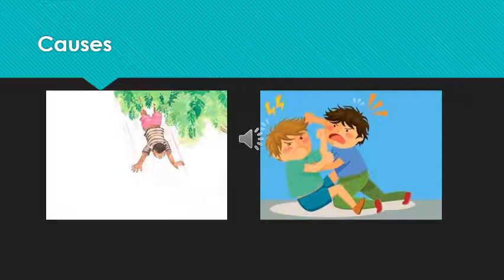So what can cause this avulsion of tooth? Any trauma like a fall or a fight can cause injury to the face and the mouth. They can be either sports injury, traumatic injury, or an accidental injury. This will either fracture the tooth or completely knock out the tooth. When it is a complete knockout we call it as an avulsion of tooth.